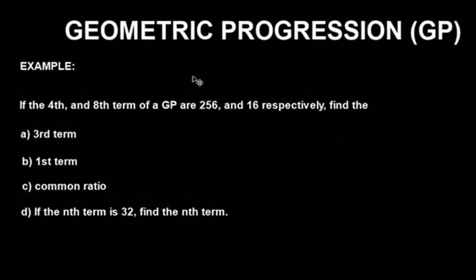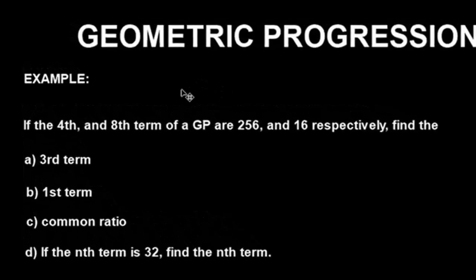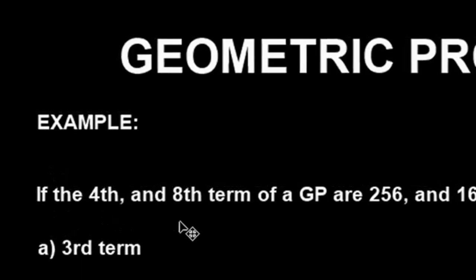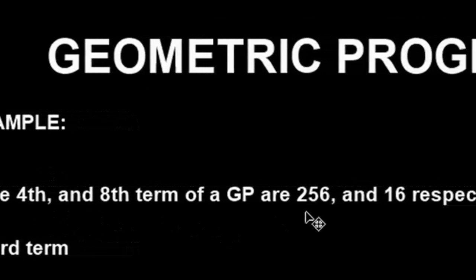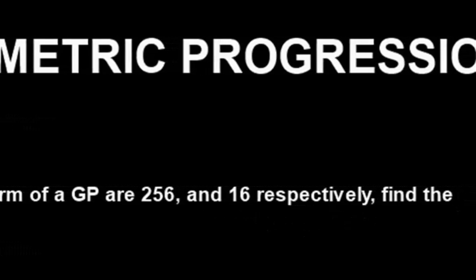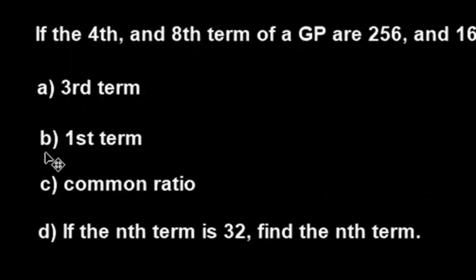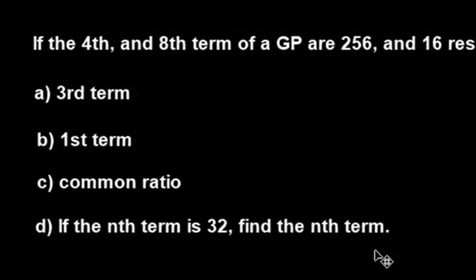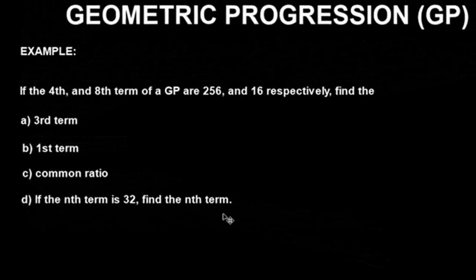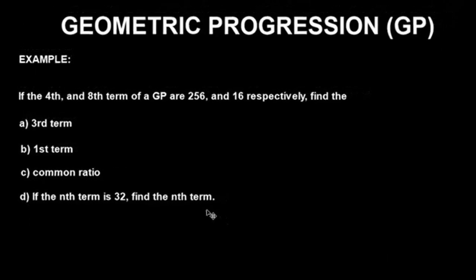Let's look at the example I have here and solve it together. The example says: if the fourth and eighth term of a GP are 256 and 16 respectively, find: A) the third term, B) the first term, C) the common ratio, and lastly D) if the nth term is 32, find n.